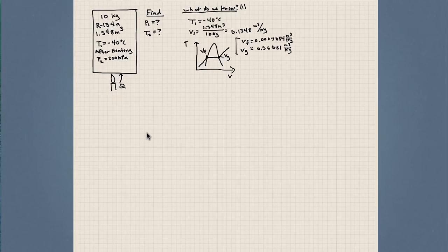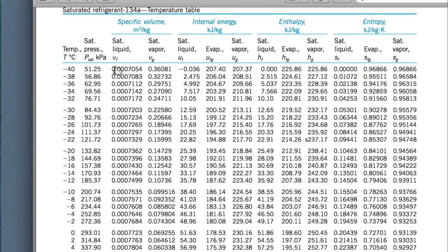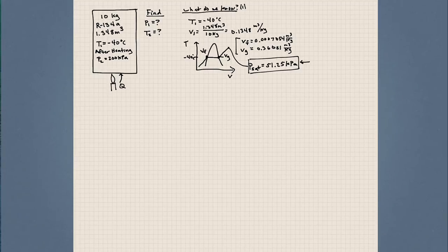We can say this is occurring on the constant pressure line at minus 40 degrees Celsius. Since we know it's a saturated mixture — because the specific volume lies between VF and VG — we look up the saturation pressure from the table. The initial pressure P1 is 51.25 kilopascals. That answers the first part of our question.